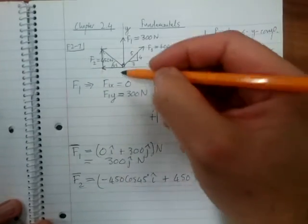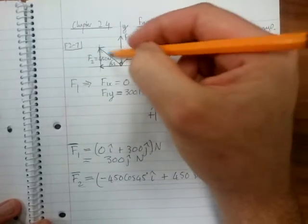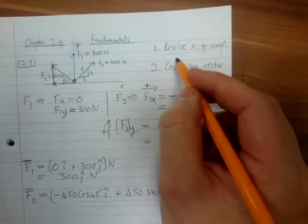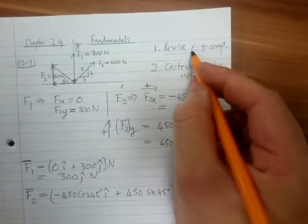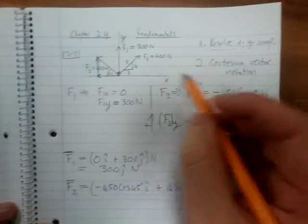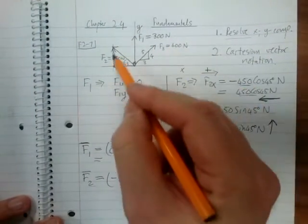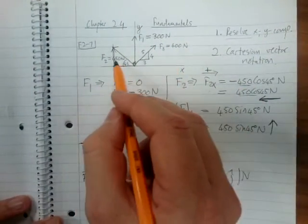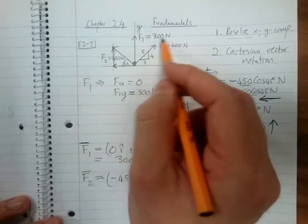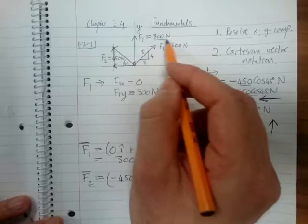Remember I asked let us resolve these forces into the X and Y components and then let us represent them in Cartesian vector notation. What we need to see here is that here we have represented the forces in a scalar form. F1 for example is 300 Newton, that's the magnitude of the force, and then the direction is that it is directed along the Y axis.